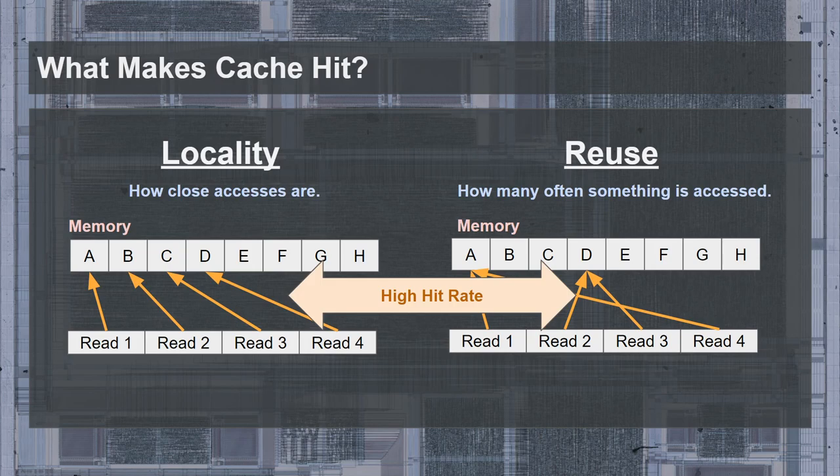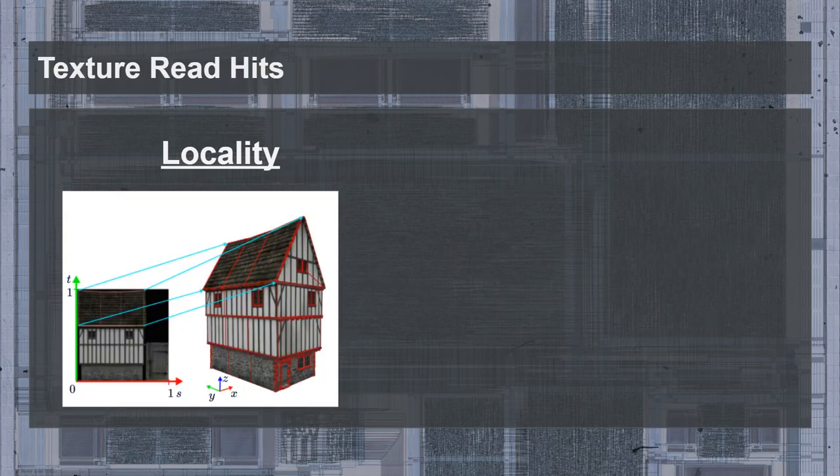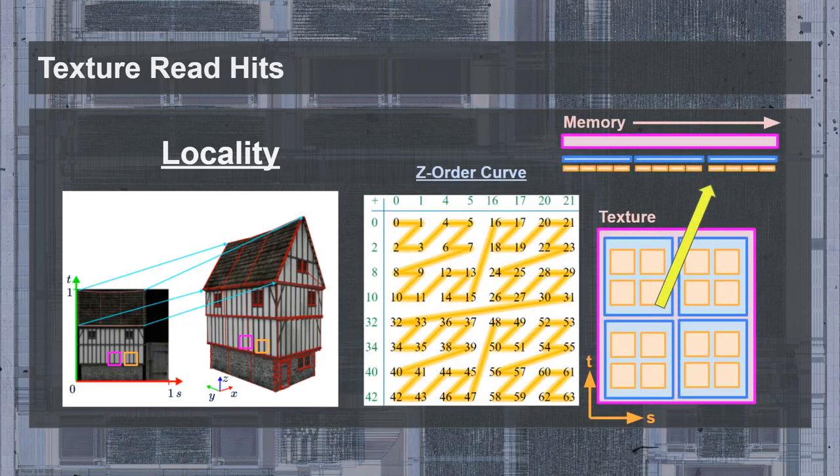So do either texture reads or frame buffer blends exhibit these behaviors? Let's address textures first, since they are simpler. It should be immediately obvious that textures will exhibit locality. Since textures are effectively images mapped onto triangles, we should expect that nearby pixels on the screen will correspond to nearby pixels in the texture — or texels. This means that if you can group nearby texels together in memory, then cache misses can only happen when crossing those groupings. You may notice that textures require grouping in two dimensions, not just one. This is typically done through a method called Z-ordering.